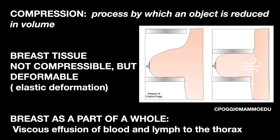Let's start with the definition of compression. It is a process by which an object is reduced in volume. In reality, the breast tissue is not compressible, since its volume does not change. It should be said, more precisely, that it is deformable. The breast shape is changed and then restored once the process is finished — we speak of elastic deformation. However, if we consider the breast as part of a wall, the thorax, then yes, there is a decreasing volume, a very small one, caused by the lowering of the paddle, which causes a viscous effusion of blood and lymph from the breast to the chest.